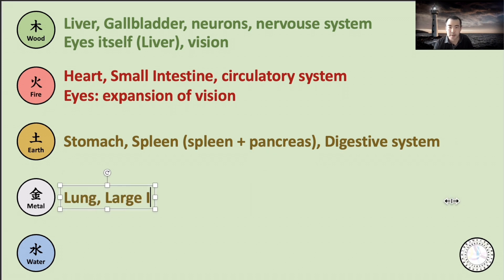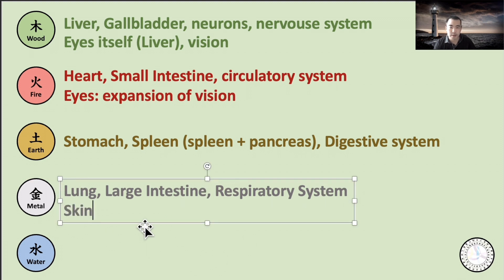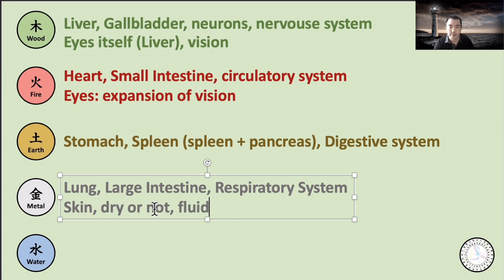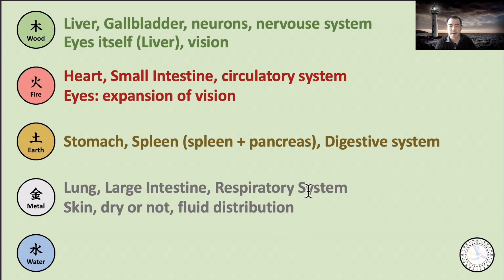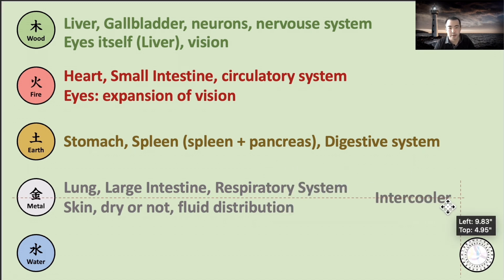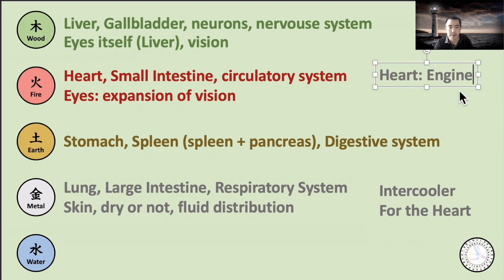Metal is lung and large intestine — the respiratory system. The skin has a really close relation with the lung. If you look at the dryness or moisture of the skin, you can assess the Metal element. Metal's Yin aspect is the fluid, contributing to fluid dispersion and distribution throughout the body. The lung is considered as the intercooler for the heart, and the heart is considered as the engine if we think of our body like a car.